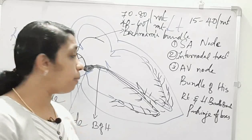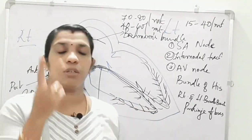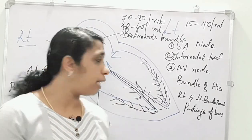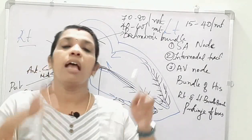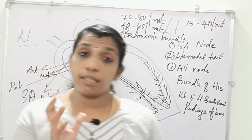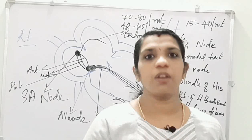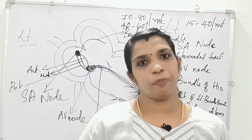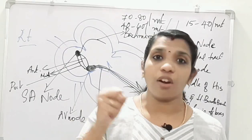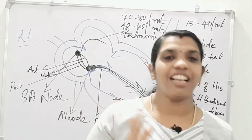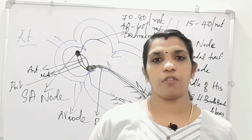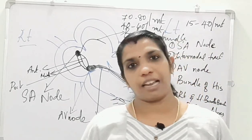One more important point: the left bundle branch divides into two branches — anterior and posterior. There is no such division for the right bundle branch. The left bundle branch divides into anterior and posterior branches, which supply the anterior and posterior parts of the left ventricle. This is how the electrical impulse is produced from the SA node and carried to the whole heart, generating the electrical activity responsible for contraction and relaxation. ECG revolves around this electrical activity of the conducting system.